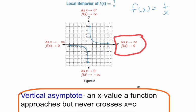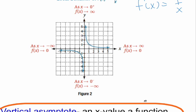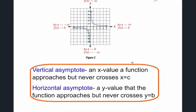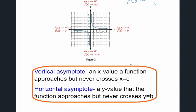As x goes to infinity, our height goes to zero, and as x goes to negative infinity, this side also goes to zero — that is a horizontal asymptote, a spot where the graph will never touch the x-axis. The vertical asymptote is where the graph will swoop up or down and never touch that x-value. A vertical asymptote is an x-value we can never cross; a horizontal asymptote is a y-value the function approaches but never crosses.